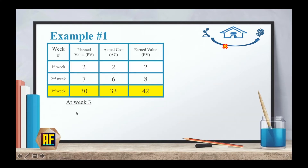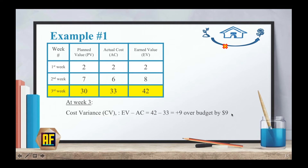At week 3, my cost variance — EV minus AC — is $42 minus $33, which is plus $9. This means that we are over budget by $9, which is good. Moving on to my schedule variance, SV, which is EV minus PV: 42 minus 30 equals plus 12, which means that we are progressing very well.